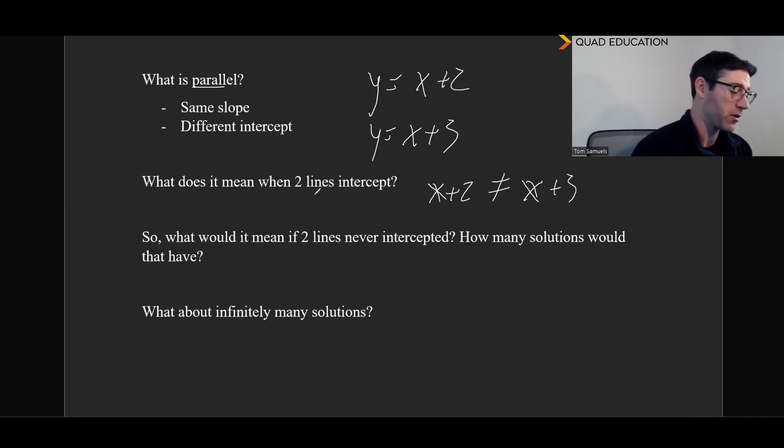And then what does it mean when two lines intercept? That's just when they cross. And parallel lines do not cross. So what would it mean if two lines never intercepted? They would be parallel. How many solutions would that have? It would have none. There would be no solutions, no intercepts. So that's important for later.